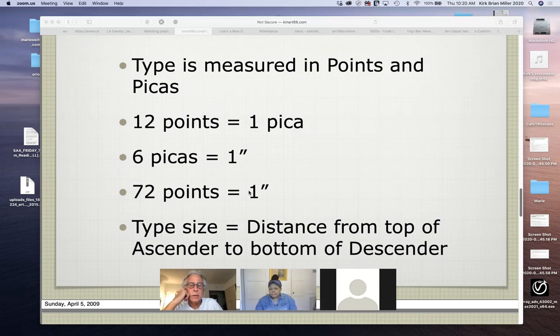Type hounds get very specific and get very picky about how they want to the sizes of type that they want to use and they can argue over should we use six point or seven point type. And it may seem like a very subtle and inconsequential difference, but it can mean a lot to designers. So it is very important. And as I measured, as I mentioned just a moment ago, the distance, type size, how it's measured is from the top of the ascender to the bottom of the descender.